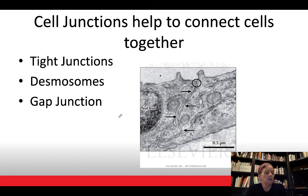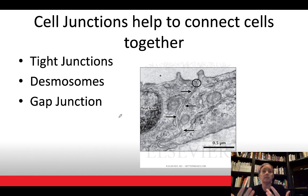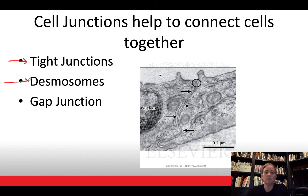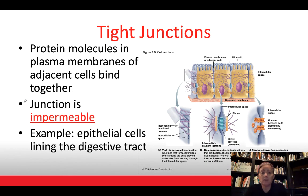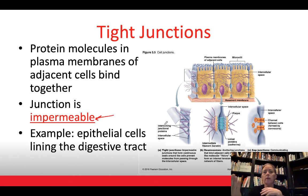Cell junctions are ways that cells connect to one another, and we see three types. This is a topic that comes up throughout the whole course of anatomy and physiology. There are three types: tight junctions, desmosomes, and gap junctions. Tight junctions form tight, impermeable barriers between plasma membranes of adjacent cells, giving us lots of control over what comes in and out.